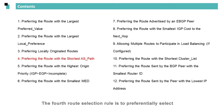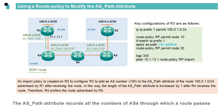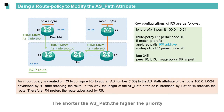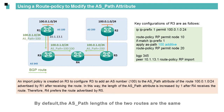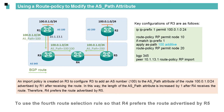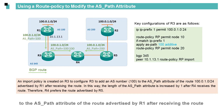The fourth route selection rule is to preferentially select the route with the shortest AS path. The AS path attribute records all the numbers of ASs through which a route passes from the source to the router that receives the route. The shorter the AS path, the higher the priority. In this topology, R4 receives the route 100.0.1.0/24 from R3 and R5. By default, the AS path lengths of the two routes are the same. To use the fourth route selection rule so that R4 prefers the route advertised by R5, we can create an import policy on R3 to configure R3 to add an AS number to the AS path attribute of the route advertised by R1 after receiving the route.